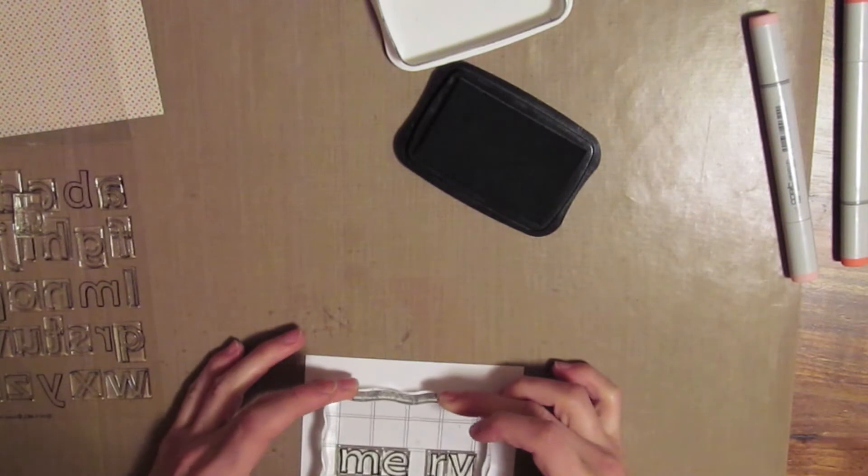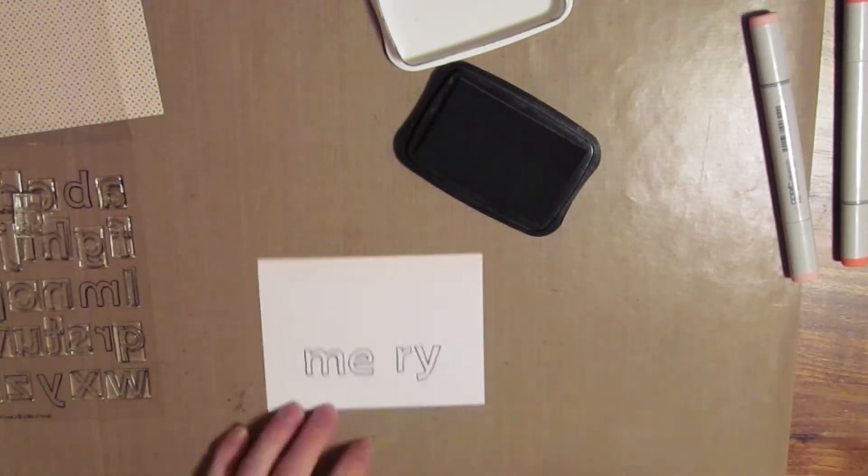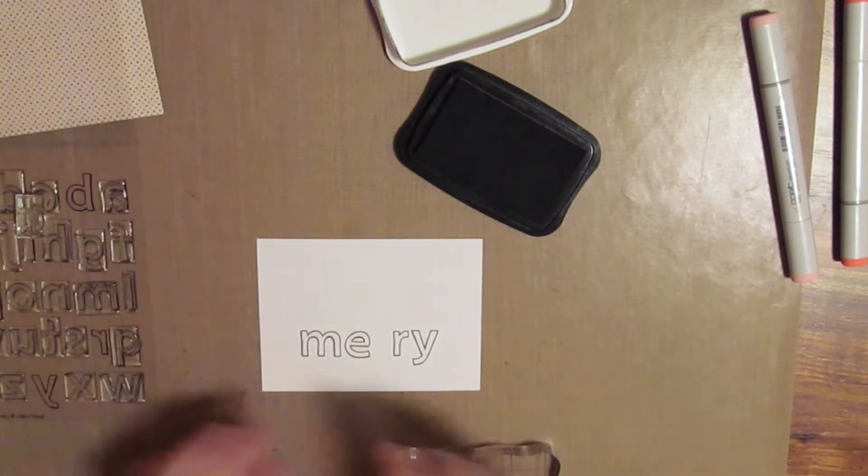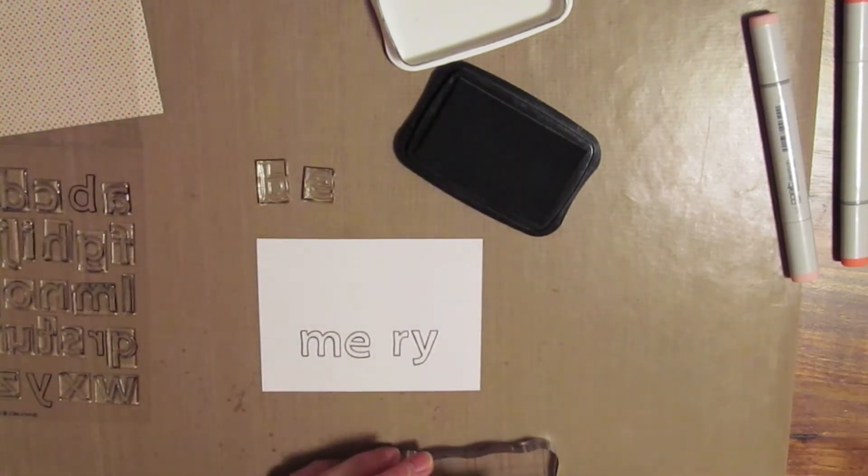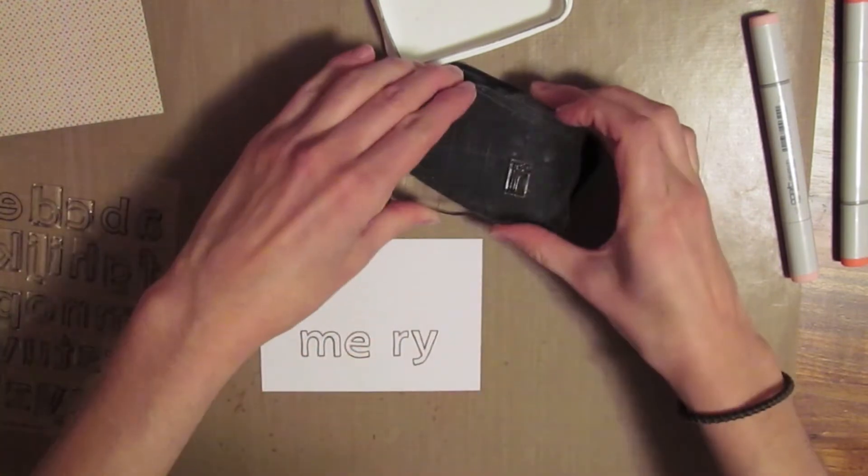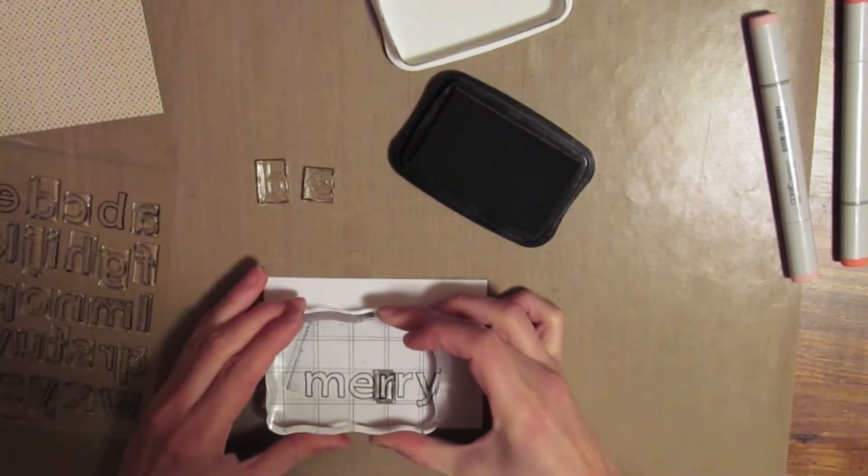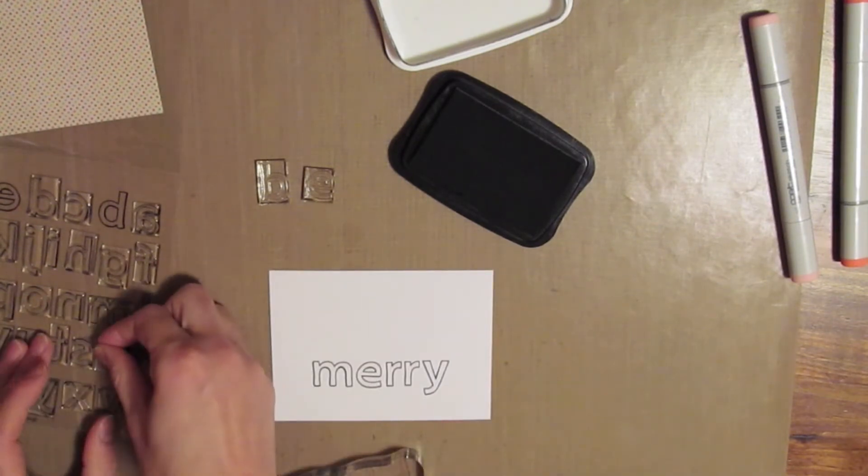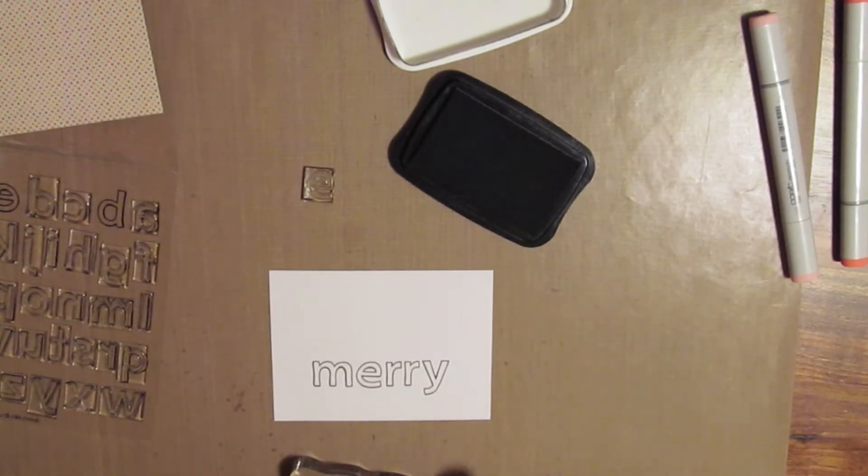So I'm just going to stamp that onto my piece of white cardstock. And they're really easy to line up since all the stamps are square. You just put them right next to each other and they line up perfect.